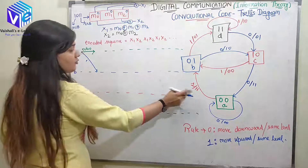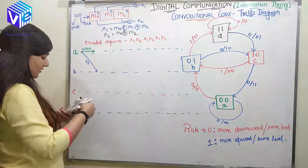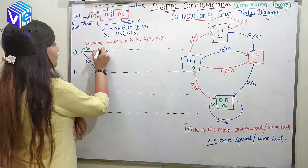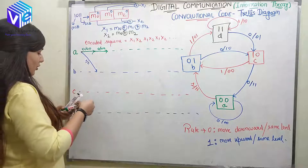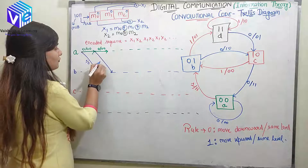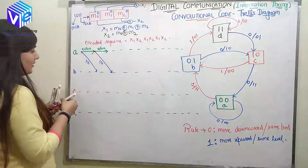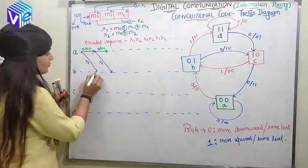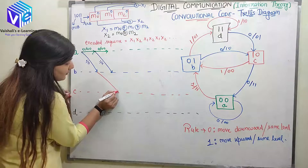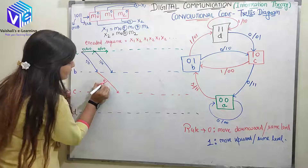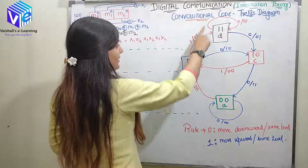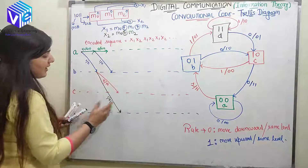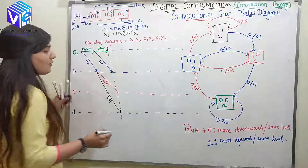For the second state: from A, when input is 0, it can remain at the same level with output 00, or when input is 1, it goes to B with output 11. Now from B, when the input is 0, it would go to C and the output is 10. When the input is 1, it would go to D and the output is 01.